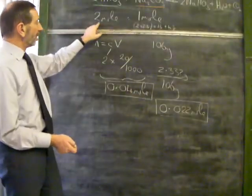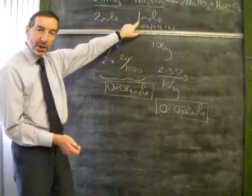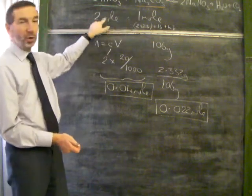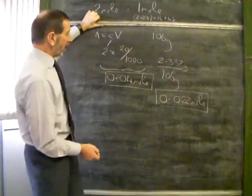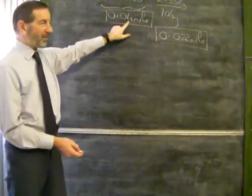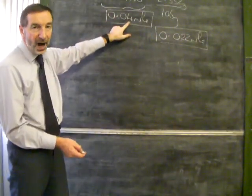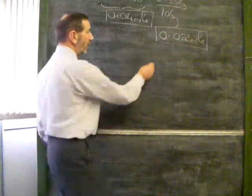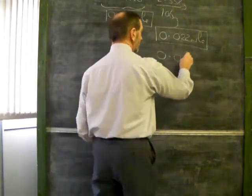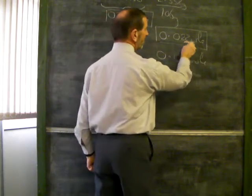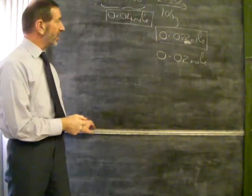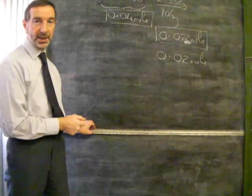Looking back here, we only need half as much sodium carbonate as acid. For every 2 moles of acid, we only need 1 mole of sodium carbonate. So if we have 0.04 moles of acid, we only need half that amount of sodium carbonate. We only need 0.02 moles. And therefore, we can see there's slightly more sodium carbonate than is required. So the sodium carbonate is in excess.